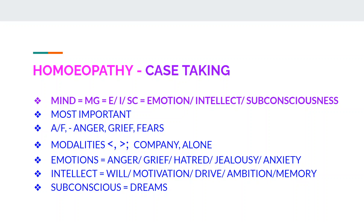Most important is the mind — the patient's mental general symptoms must be asked. They are of three types: emotions, intellect, and subconscious. Most important are emotions, then intellect and subconscious — including causation — then modalities. Ailments from emotional causes are most important: anger, grief, fears, and so on. Then ask about modalities — aggravation and amelioration. Intellectual symptoms include will, motivation, drive, ambition, and memory. The subconscious state is represented by dreams.